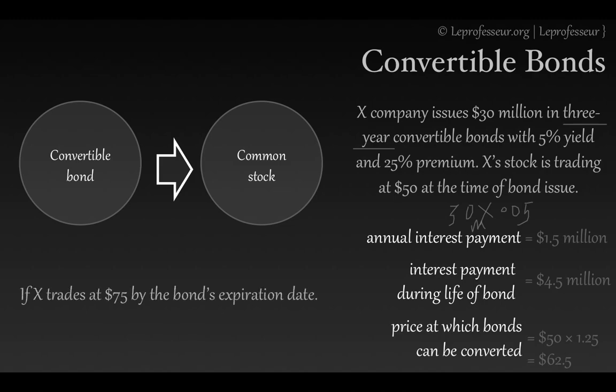Now assume the stock rises to $75 per share in the future. The profit per share from converting at the conversion price is $75 minus $62.50, which equals $12.50 profit per share — multiplied by however many shares you received from your convertible bonds.